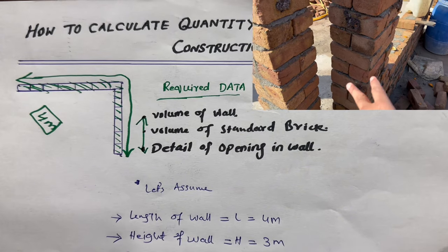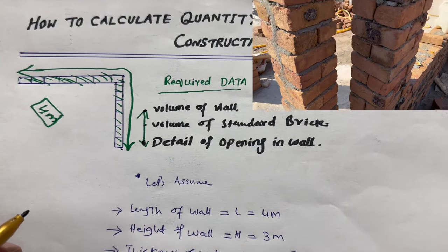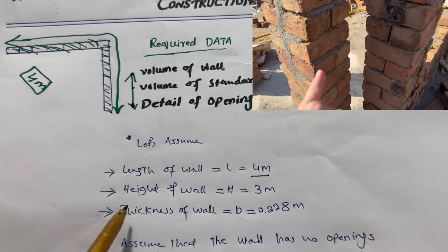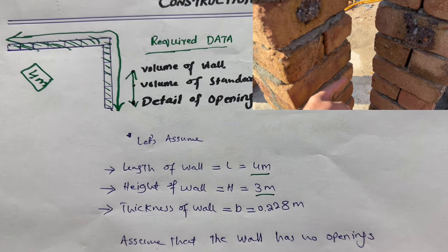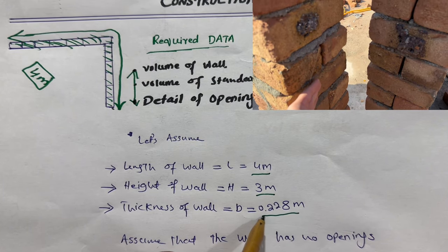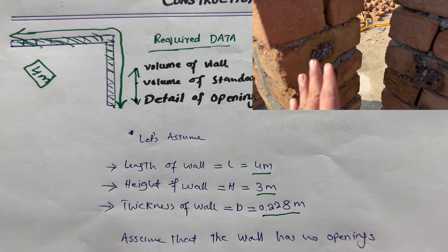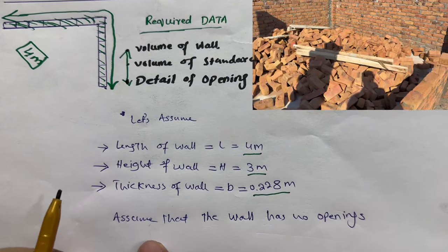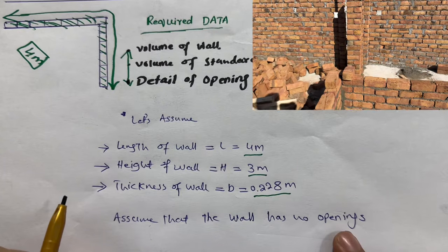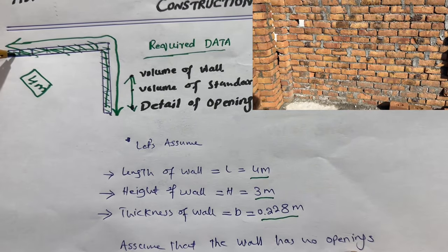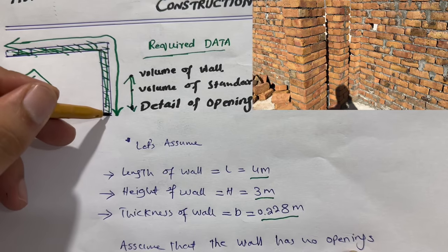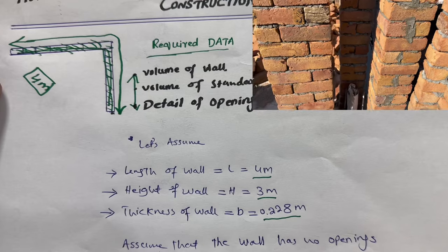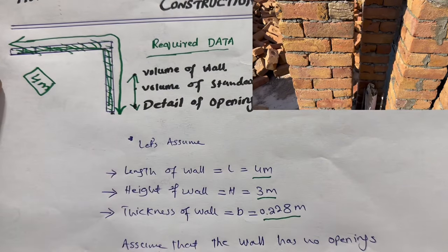Let me find the volume of wall. Let's assume some important things here. Length of the wall is suppose four meter, height of the wall is three meter, thickness of the wall is 0.228 meter, which means normally about nine inch wall. Now assume that the wall has no opening. If you have opening for door and windows ventilation, you can deduct, but assume that the wall has no opening.